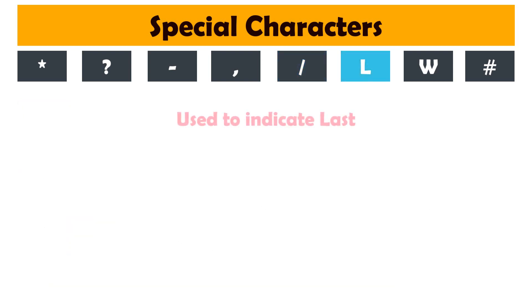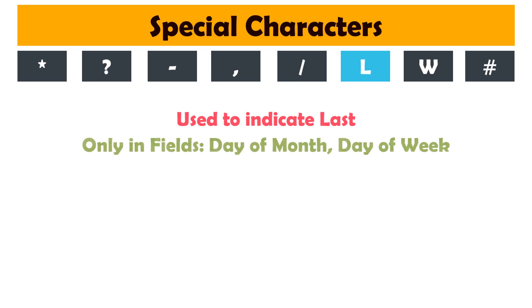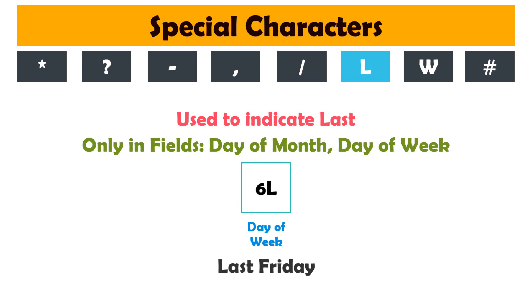L is used to indicate 'last'. It may be used only in the day of the month or day of the week fields. For day of the week, it can be used after another value, for example '6L', to indicate the last Friday.